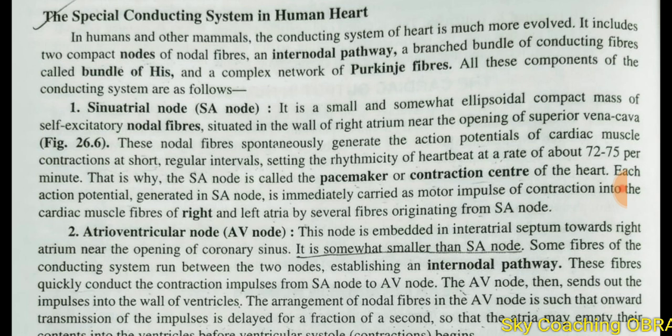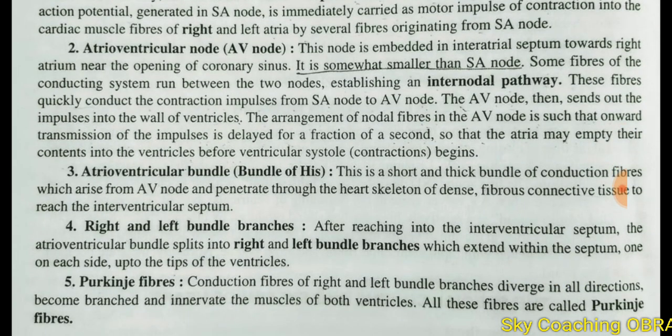All these components of the conducting system are as follows. We are talking about which components are in the conducting system. The components are: Sinoatrial node, Atrioventricular node, Atrioventricular bundle, and right and left bundle branches — there are two branches of the bundle of His: the right ventricular and left ventricular branches.